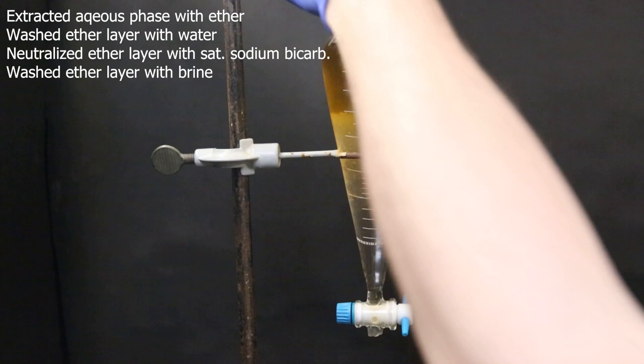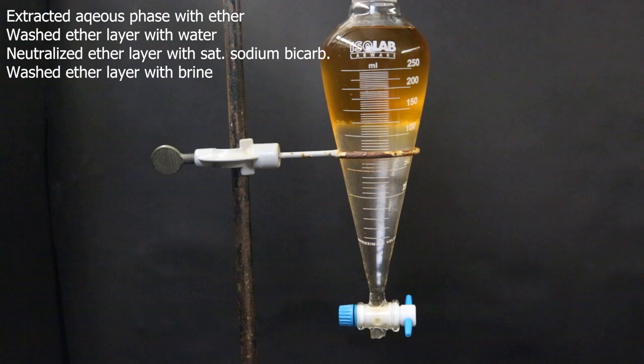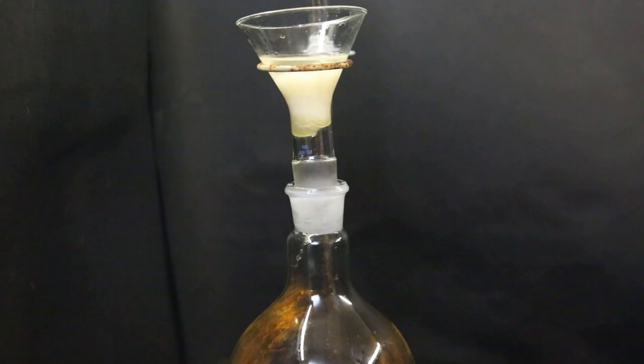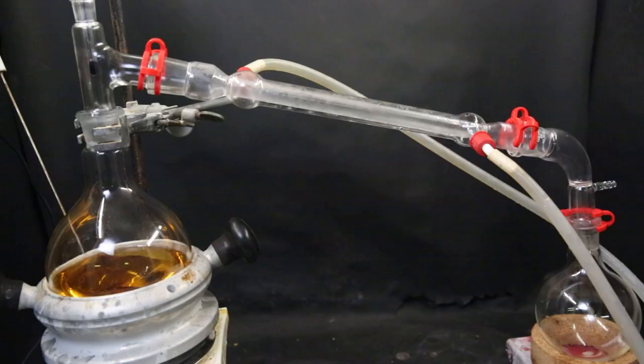After that, I put all of the ether layer into a beaker and added some sodium sulfate to dry it. Then I filtered it all through some cotton into a large flask and set it up for a regular distillation to boil off all of the ether. When all of the ether had come over, some dark oil is left behind.